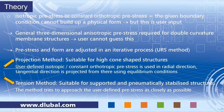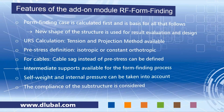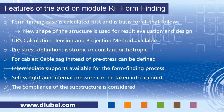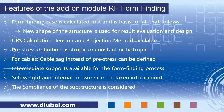That's all for the theory. To summarize the features of the add-on module RF Formfinding: the form-finding case is defined as a case in RFEM, calculated first, and is the basis for all that follows. All loads defined afterwards are calculated on the deformed shape. Both the URS methods are available. You have two pre-stress definitions — isotropic or constant orthotropic — which are adjusted during the iterative process. For cables, you can also define a cable sag instead of pre-stress.